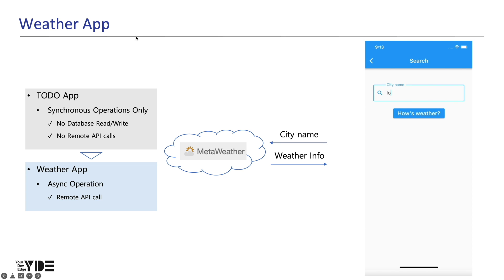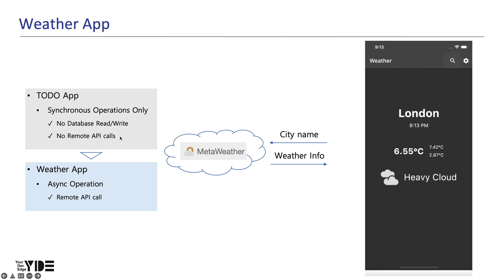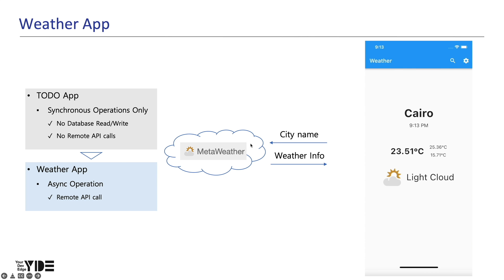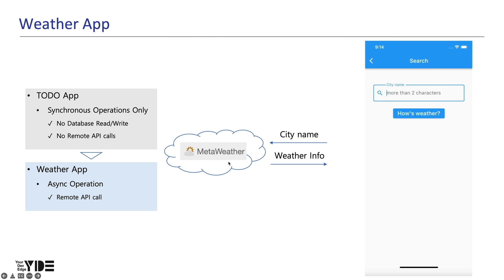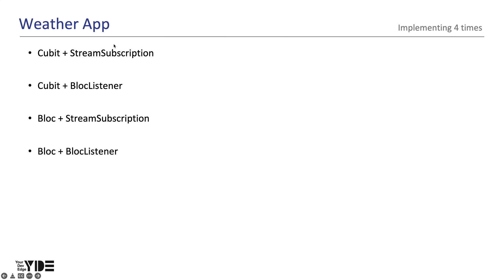The Weather app will be the second app we make using Bloc. Unlike the To-Do app, it includes async operations essential for modern apps, such as remote API calls and reading/writing to a database. We plan to create an app that reads and displays weather-related data for a city from metaweather.com and changes the theme of the app according to the temperature. It will also present a simple architecture consisting of a service, repository, and Bloc layer. As with the To-Do app, we will implement the app four times using different combinations of Cubit/Bloc and stream subscription/BlocListener.